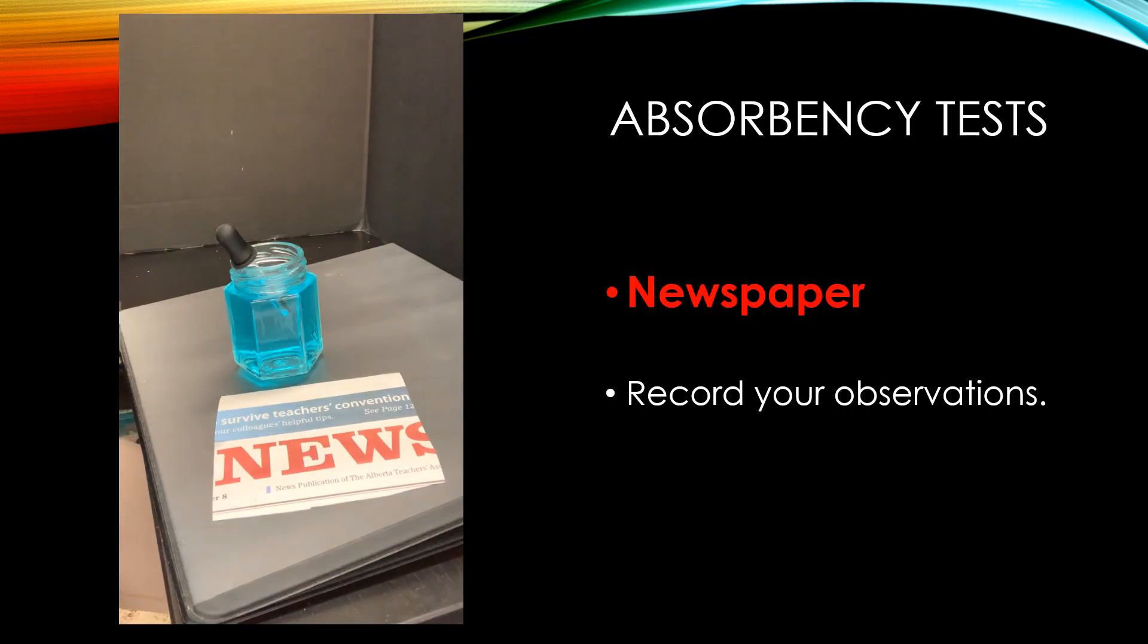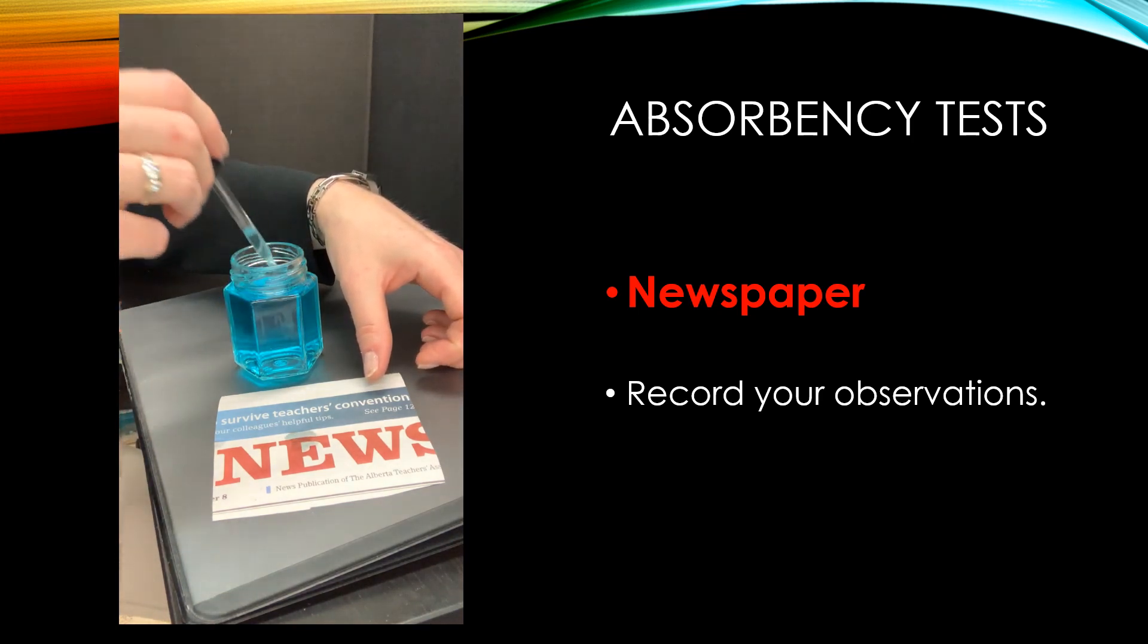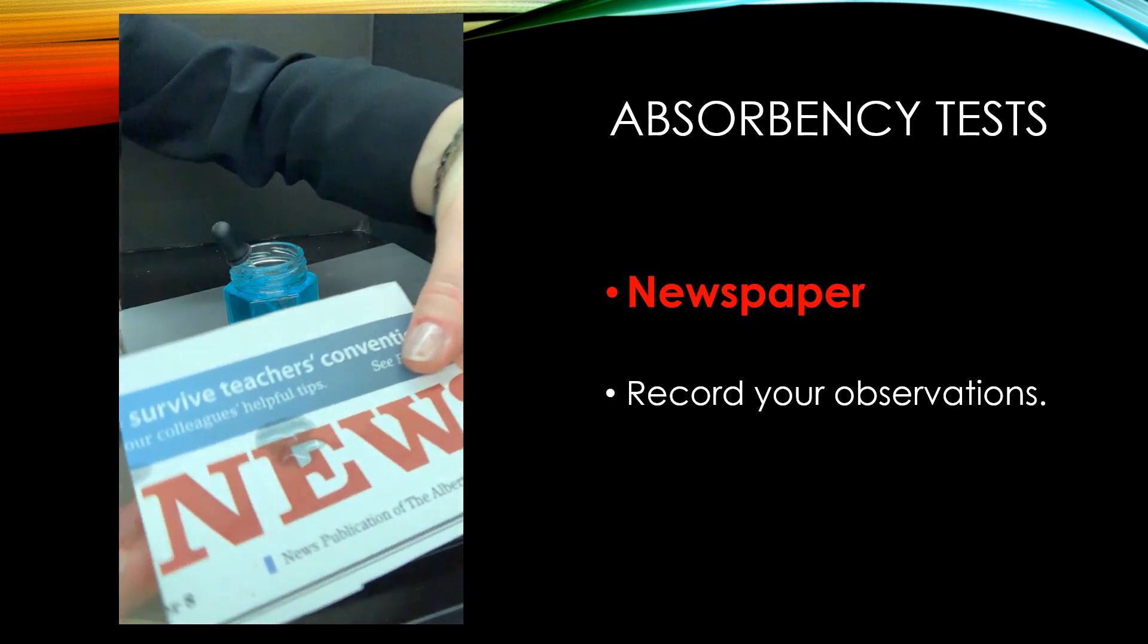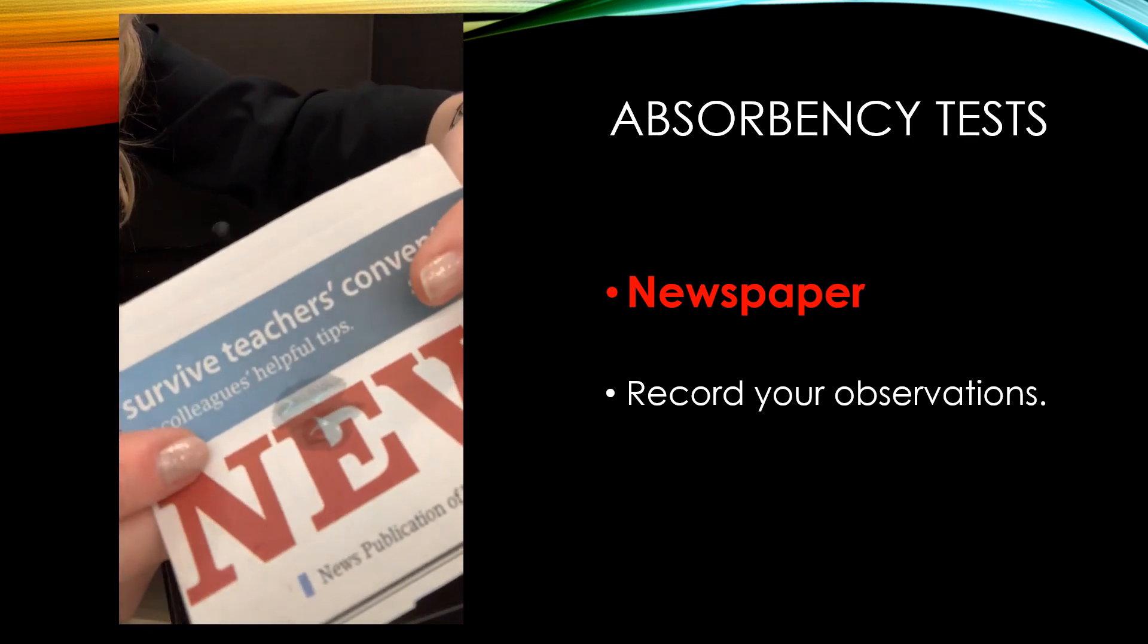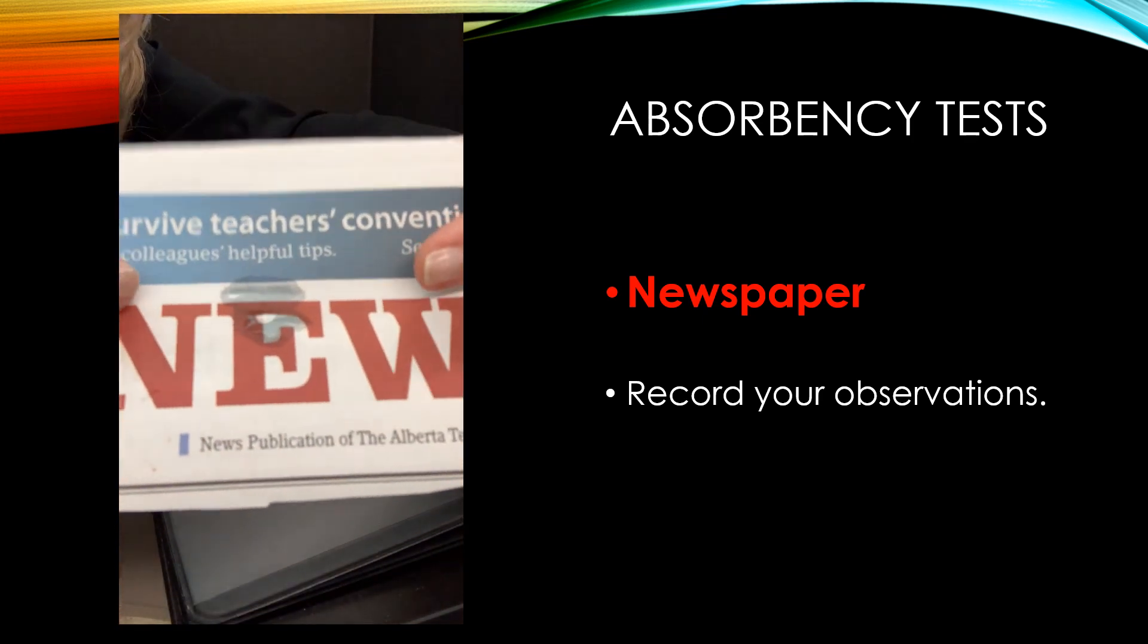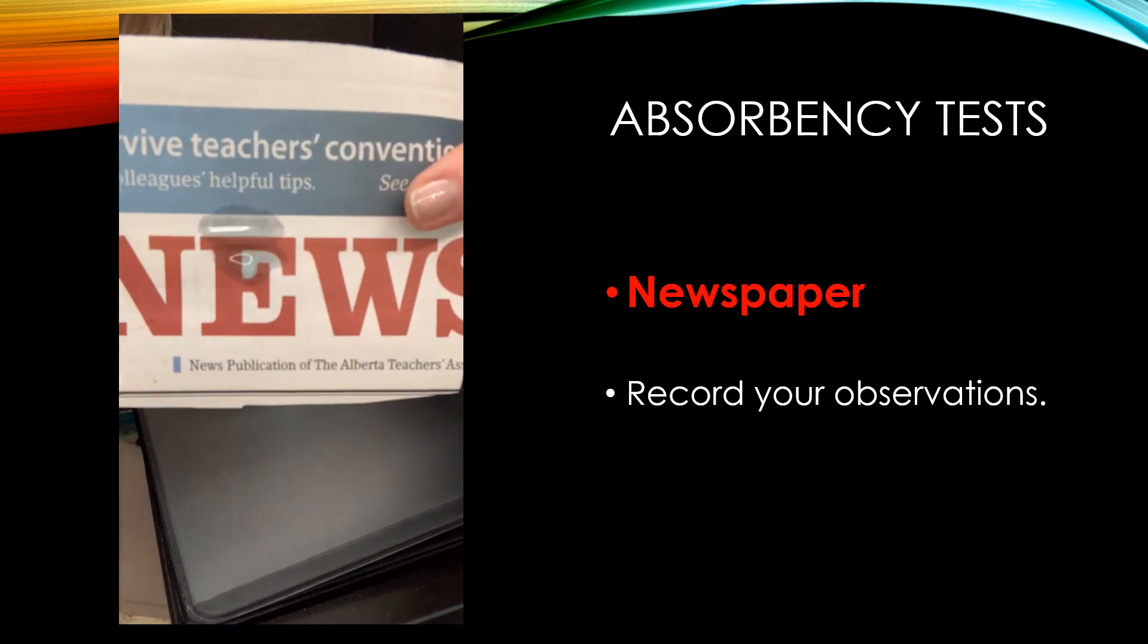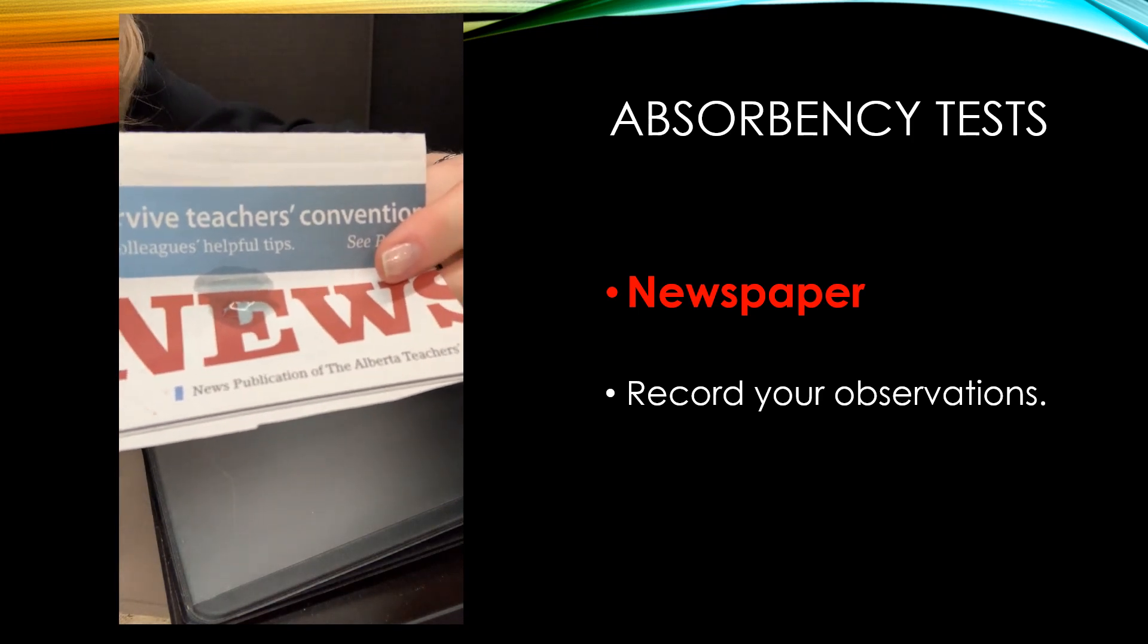Now it's time to test the newspaper. We'll take our eyedropper and put three drops on it. One, two, three. This one, it sits on top slightly. You can see it's pooling a little bit, but it is being absorbed by the newspaper, more slowly than the other materials, that's for sure. But it is another material that's slowly absorbing the liquid.